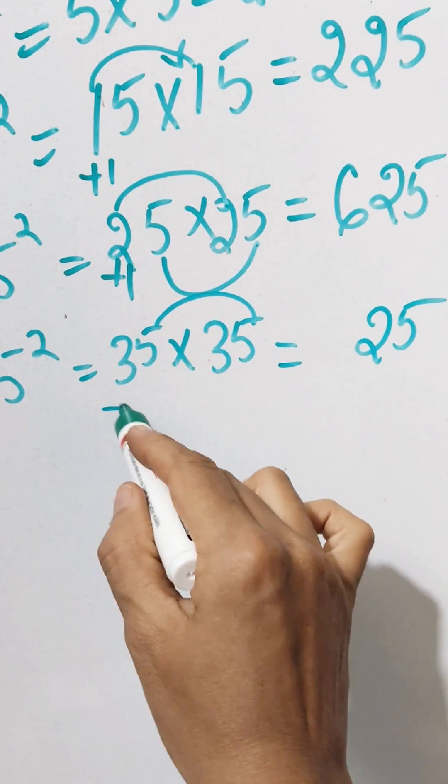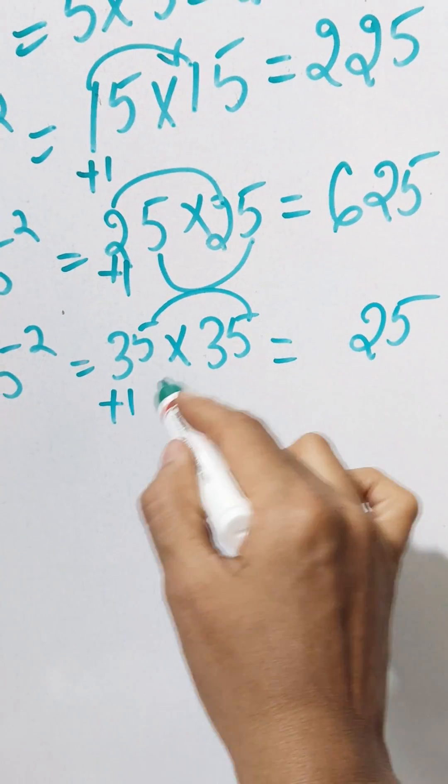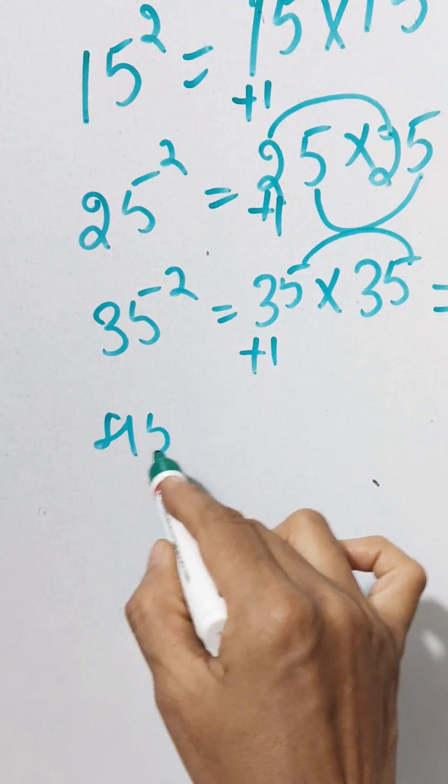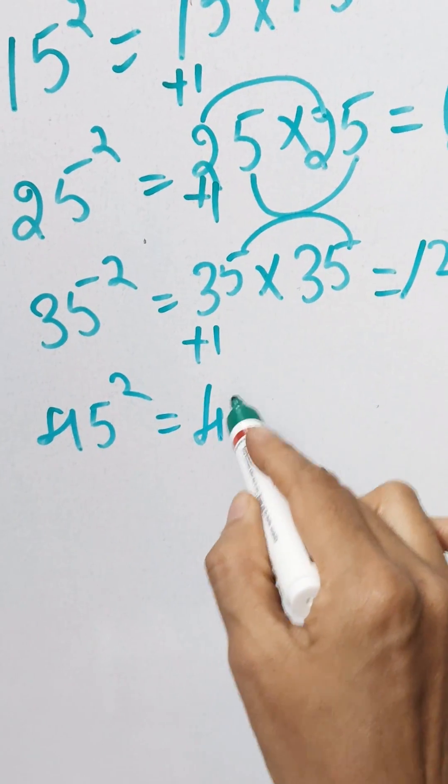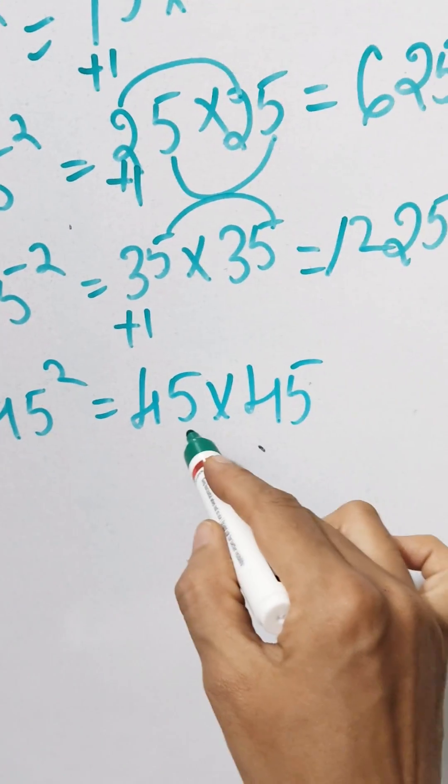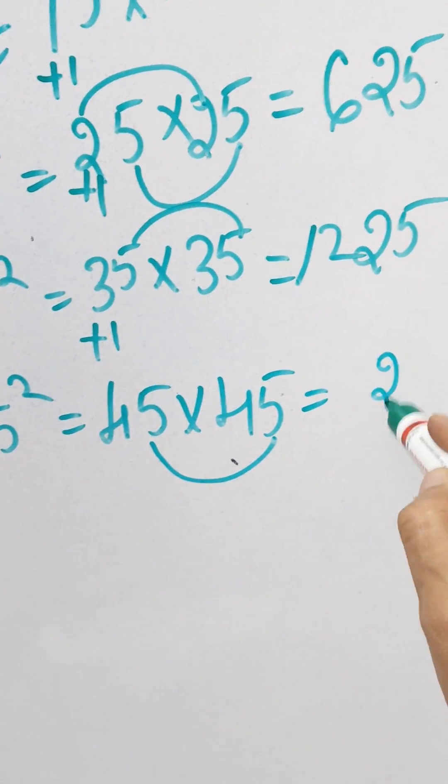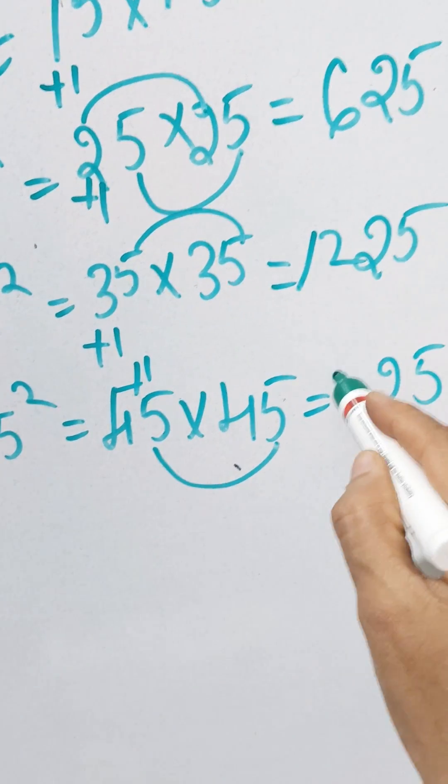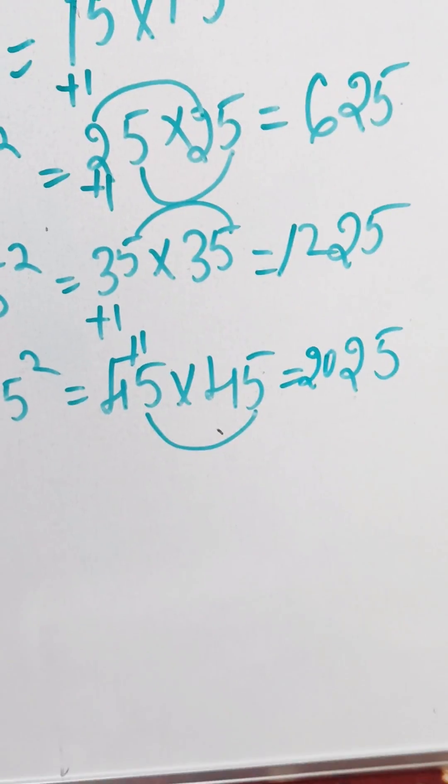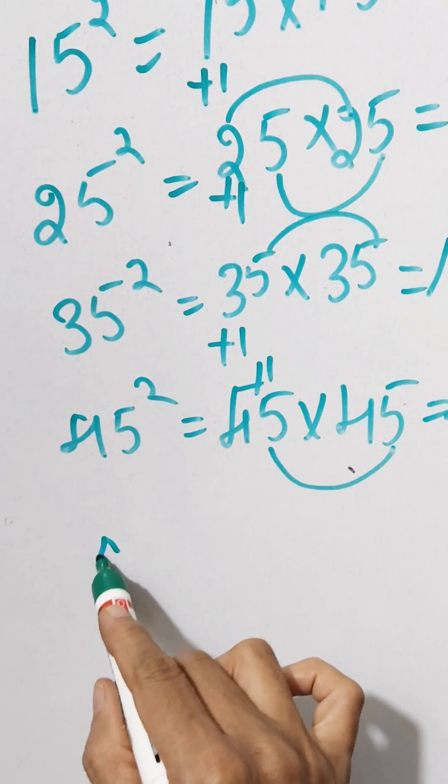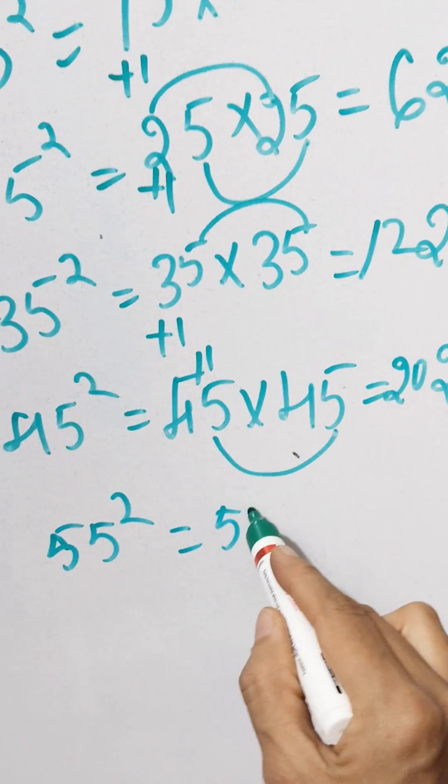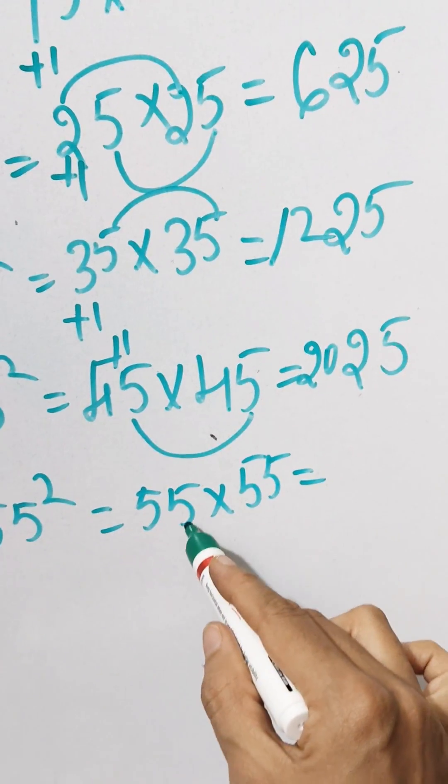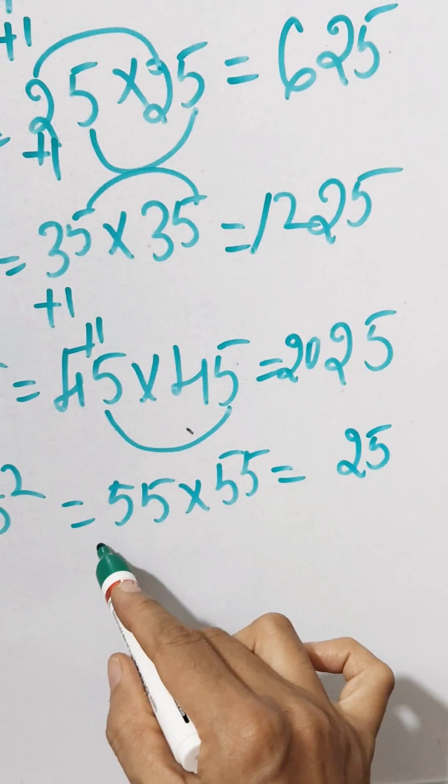Similarly, 45 square, 45 into 45. Multiply 5 and 5, which is 25. Add 1 to this number, so 4 plus 1 is 5. Multiply 5 into 4, which is 20. So the answer is 2025.